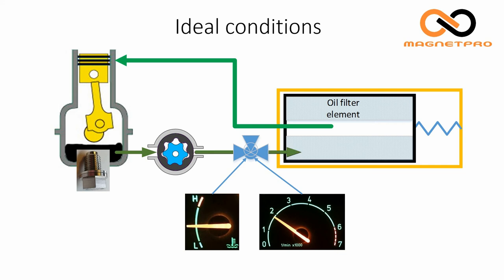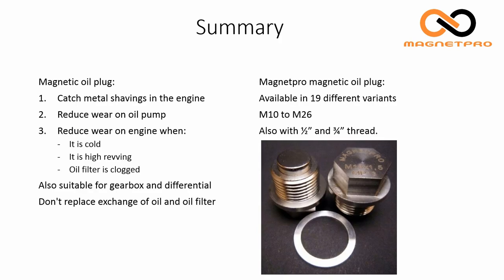To sum it up, a magnetic oil plug catches metal shavings that are generated by wear and tear inside the engine. It reduces wear on the oil pump and it reduces wear on the engine when it's cold, high revving, or the oil filter is clogged.